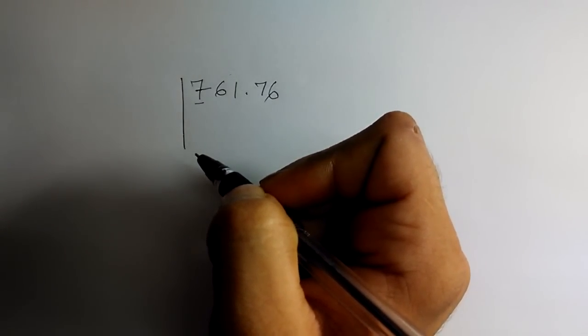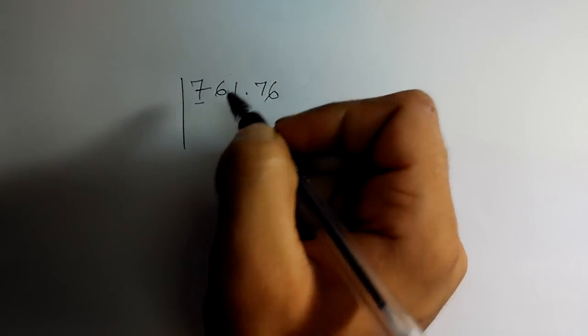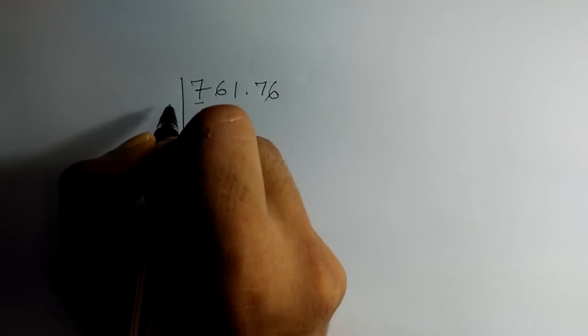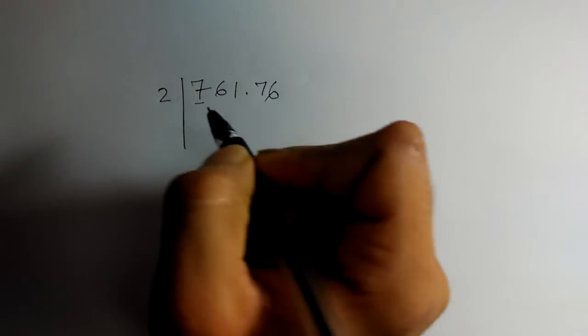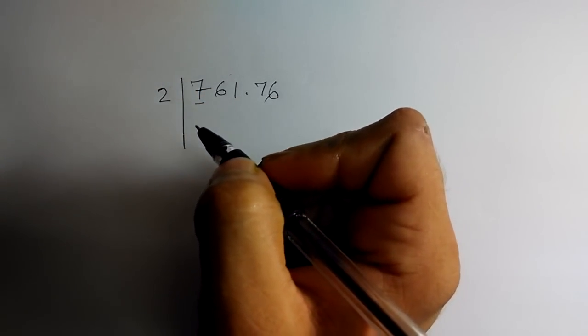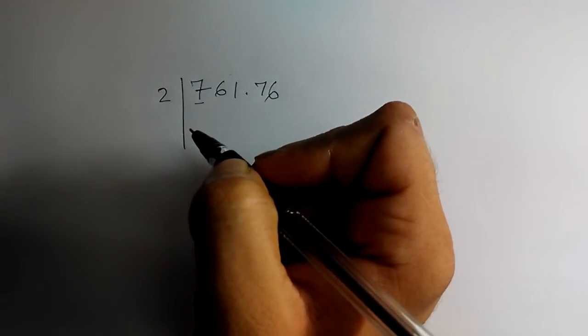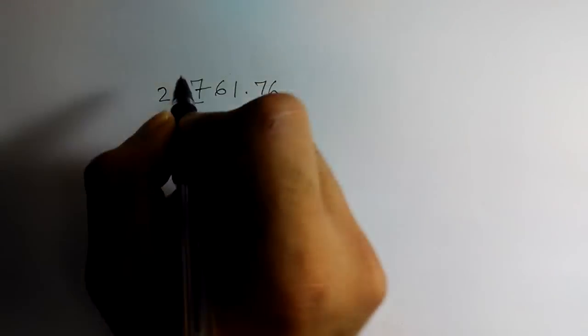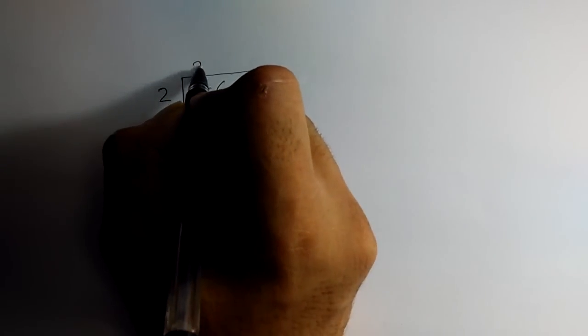7, so let us take 2. We can't take 3 as 3 into 3 is 9, which is more than 7. So maximum number we can take is 2. 2 times 2 is 4, we have 3 left.